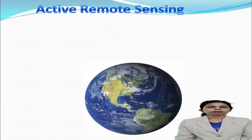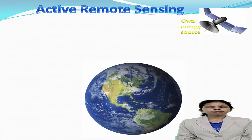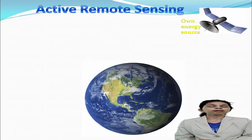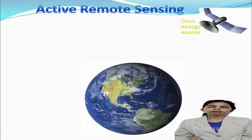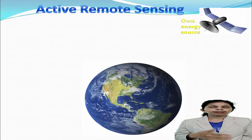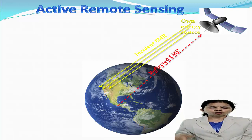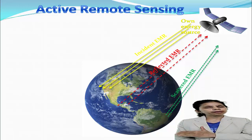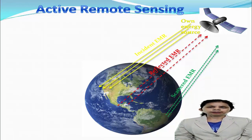Now we will study about active remote sensing. Active remote sensing has its own source of energy — it does not depend upon the sun's energy. Active remote sensing can operate both day and night. The remote sensors used in active remote sensing have their own artificial source of energy. This source sends electromagnetic radiation on the earth or on a target to be studied. The reflected and scattered electromagnetic radiation is detected and measured by the sensor on the satellite, sent to receiving stations on earth, and after analysis, the information is available to us.